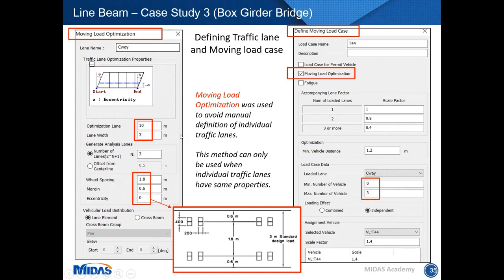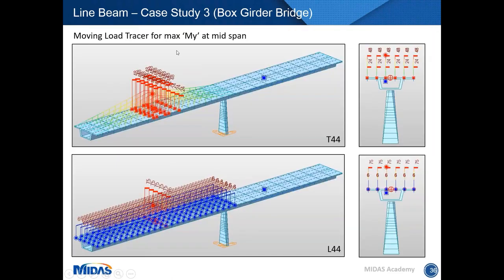The advantage of moving load optimization is that you specify the carriageway width and the software automatically determines traffic lane number and position. You also input parameters such as lane width, wheel spacing, and margin based on vehicle configuration. After defining the carriageway, you set up the moving load case by selecting moving load optimization, choosing the carriageway and vehicles. Results show maximum flexure at mid-span for T44 and L44 load cases.